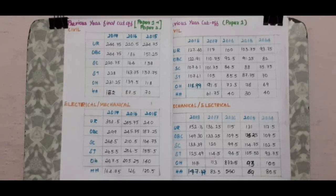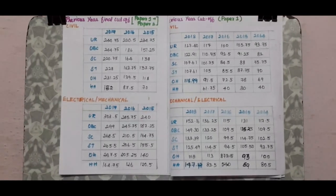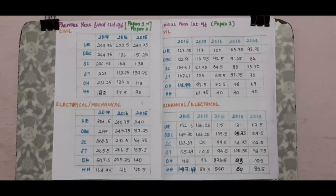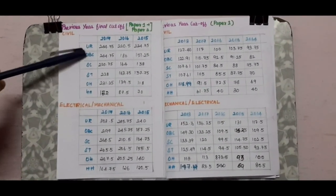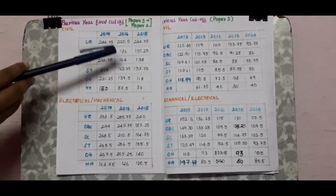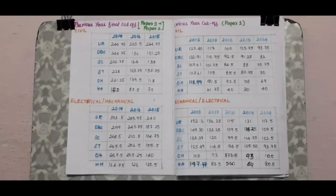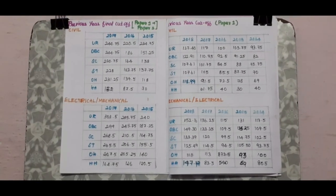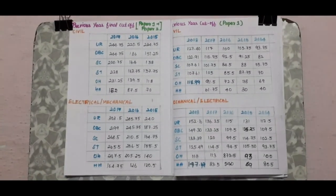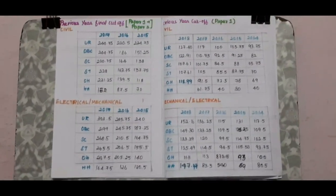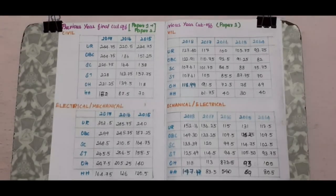The final cutoff combines Paper 1 and Paper 2 scores. Looking at cumulative totals for civil in 2017, the combined score was around 254.75. For electrical in 2017, the total was 303.5. Paper 2 is out of 300, and together with Paper 1 the combined total is used for final selection.